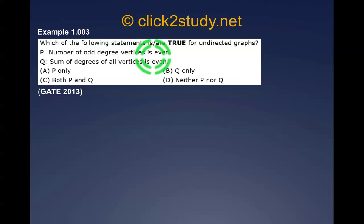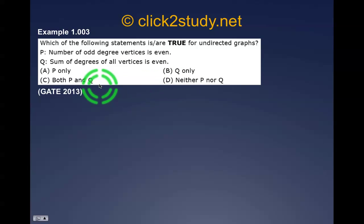So statement P says: if you take any graph, count the vertices that have odd degree, that count should be an even number. Statement Q is: the sum of degrees of all vertices is even. We have to determine whether only P is true, only Q is true, both are true, or neither is true.